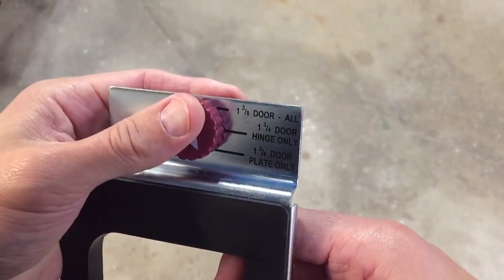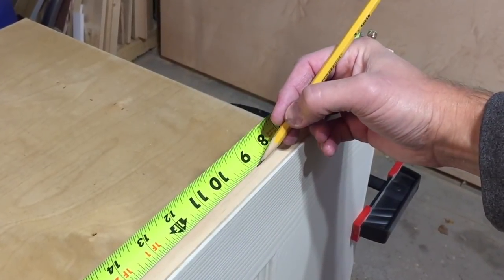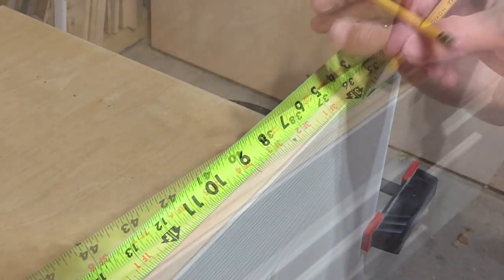You will first need to set the plate cams to the proper door thickness setting, and then based on the door size in the layout sheet, mark the door where your center lines need to be.